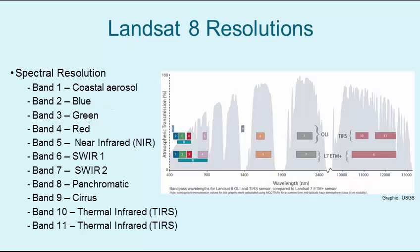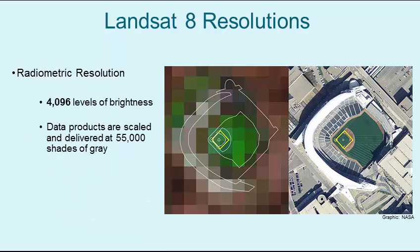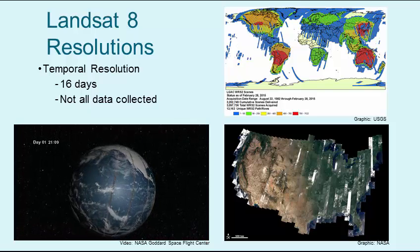The spectral resolution for Landsat 8 consists of 11 bands between the Operational Land Imager and Thermal Infrared Sensor. As illustrated by this graphic, Landsat 8 has a higher spectral resolution compared to Landsat 7, which has 8 bands. The radiometric resolution for Landsat 8 has been increased to over 4,000 levels of brightness, then scaled to 55,000 levels in delivered imagery. This greatly increases the level of radiometric resolution from Landsat 7's 256 levels and will allow for a greater ability to differentiate terrestrial phenomena.